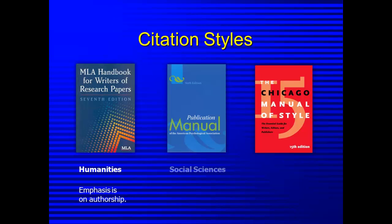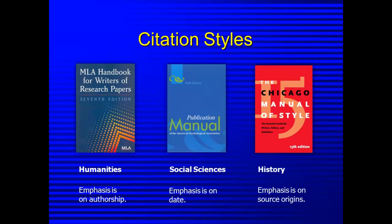The American Psychological Association style is popular in social science courses. Since currency of works is important in the social sciences, you would cite the date a work was published in the text of your paper. The Chicago Manual of Style is used often in history courses. This style uses footnotes and endnotes to identify the origin of sources.